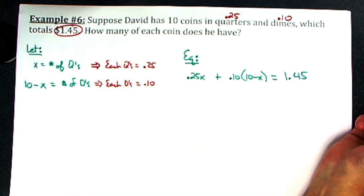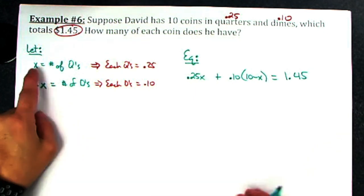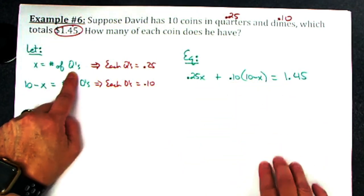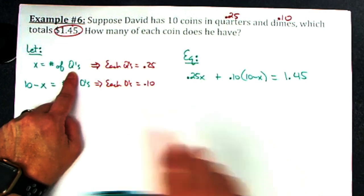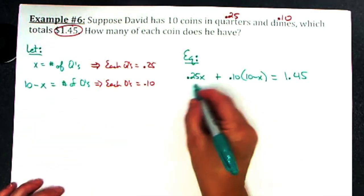Now I have an equation. Now I can solve this. Since I let x be the number of quarters, when I solve this for x, that number will be the number of quarters because that's the way I defined the variables.